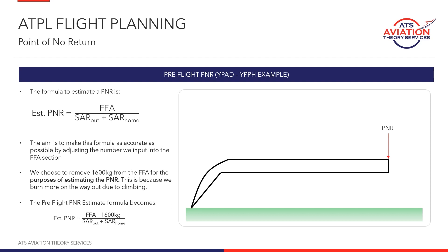As you've read in the textbook, the formula to estimate a PNR position is flight fuel available divided by SAR out plus SAR home. We're going to be slightly adjusting this formula to make it a bit more accurate based on the scenario. There are three scenarios: a pre-flight scenario and two in-flight scenarios — one where we return to an airport behind us and another where we return to an airport in front of us. We'll make slight adjustments to the PNR formula to make those estimates more accurate.